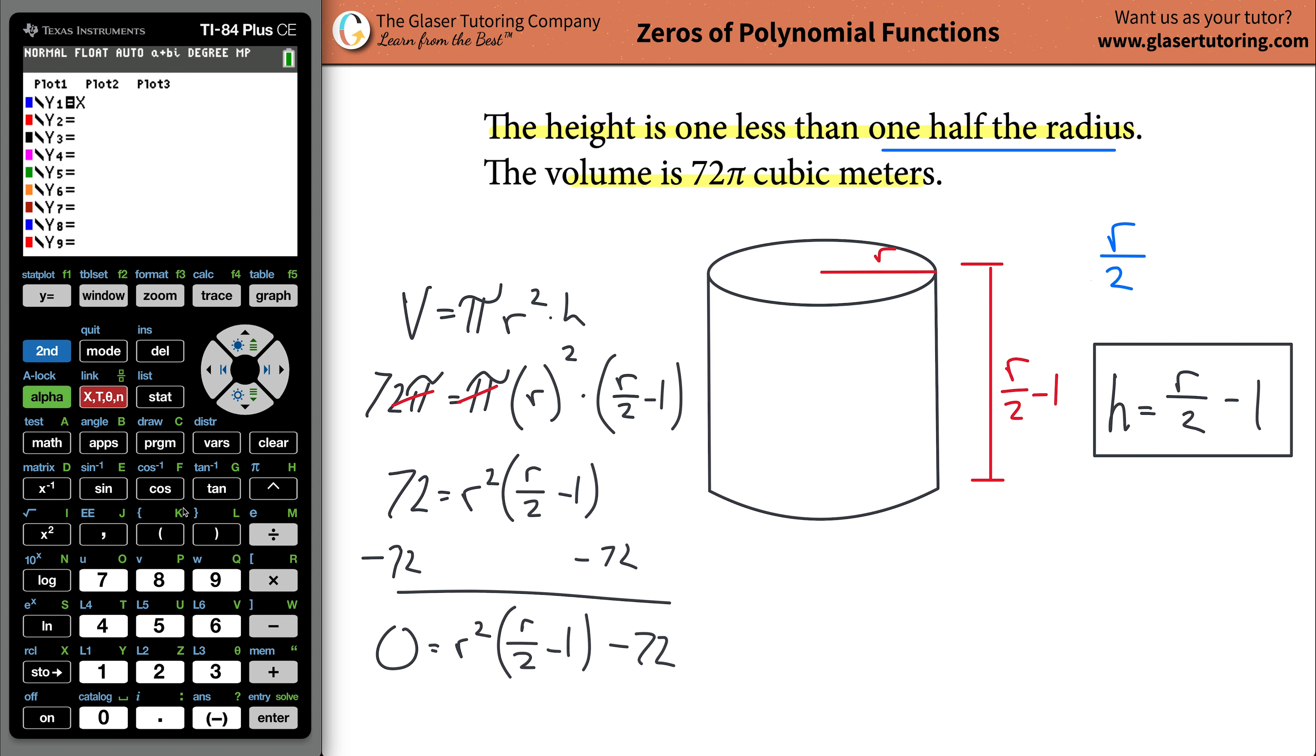So remember, first you've got to set it equal to zero. Now, I'm going to use x instead of R, because that's just the variable here. So it's x squared, parentheses, then you're going to do x over two. x divided by two, minus one. Close the parentheses. Minus then 72, and what you're going to do is you're going to hit graph.